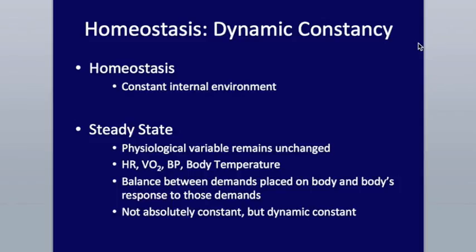So homeostasis, or the dynamic constancy as the book describes it, is simply a constant internal environment. Our bodies are constantly trying to maintain homeostasis, trying to maintain a certain level of consistency within the body. We try to get to this steady state, like we talked about in chapter one when we discussed VO2 and carbon dioxide production.